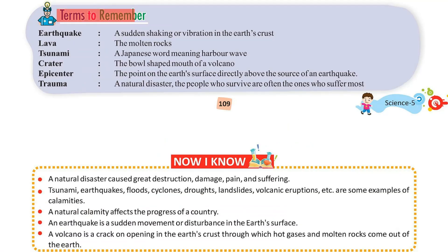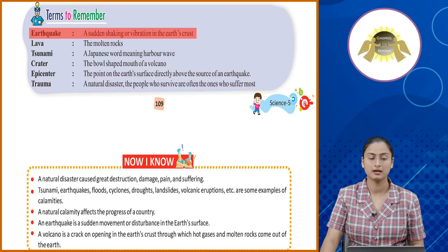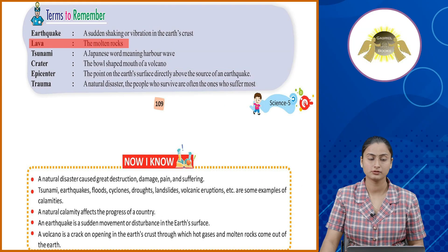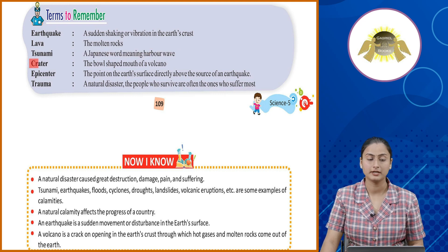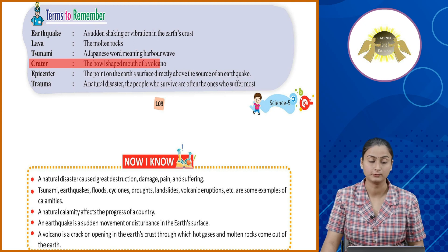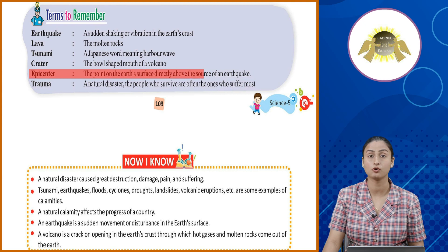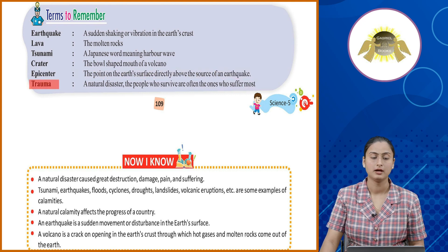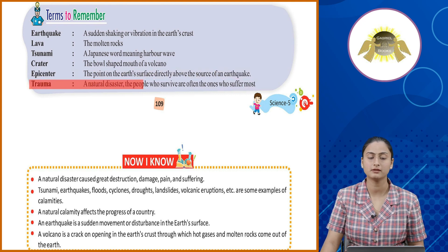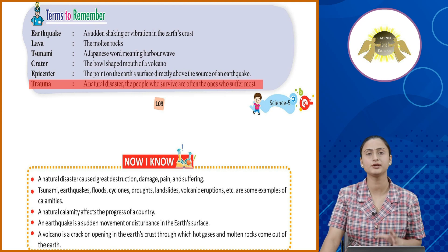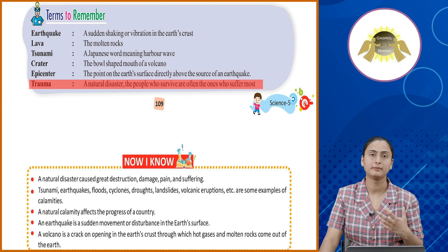Terms to remember: Earthquake — a sudden shaking or vibration in the earth's crust. Lava — the molten rocks. Tsunami — a Japanese word meaning harbour wave. Crater — the bowl-shaped mouth of a volcano. Epicenter — the point on the earth's surface directly above the source of an earthquake. Trauma — the deep psychological shock experienced by survivors of a natural disaster. Students, these are some terms that we have written in the chapter.